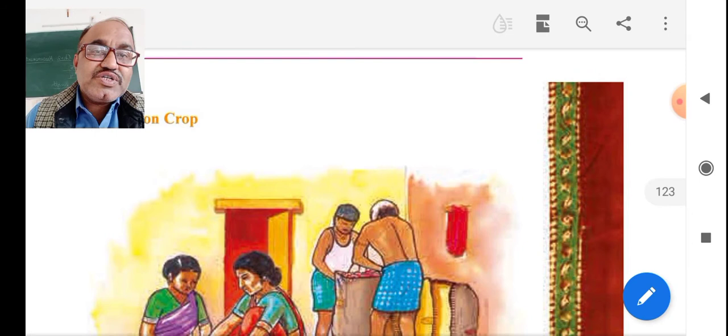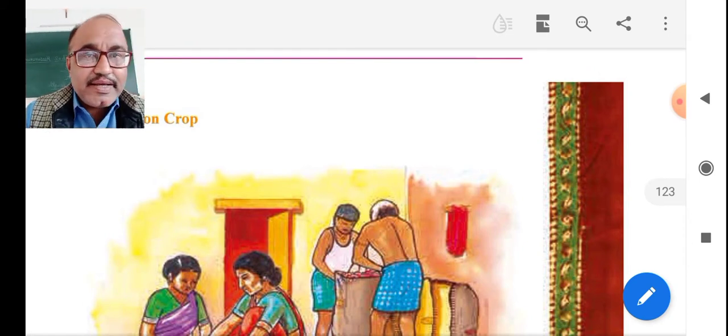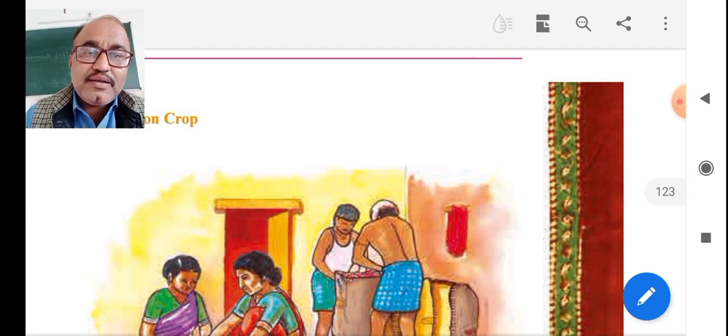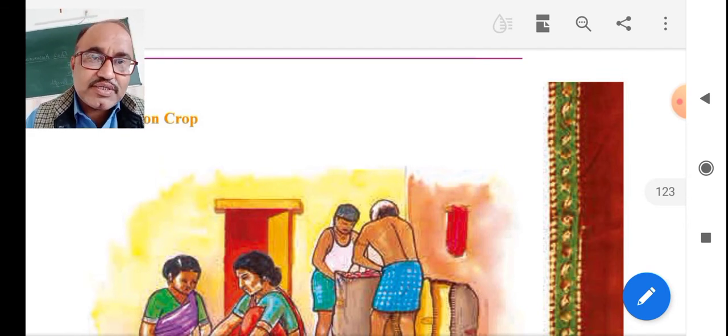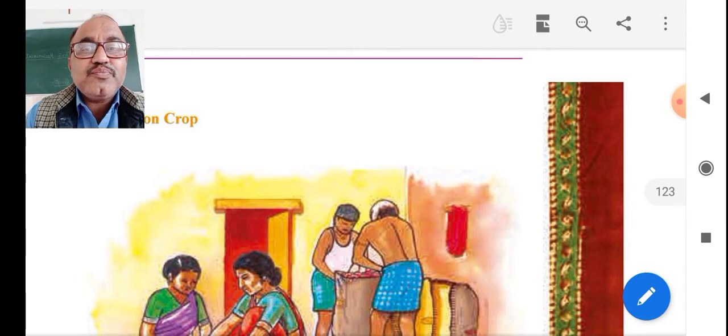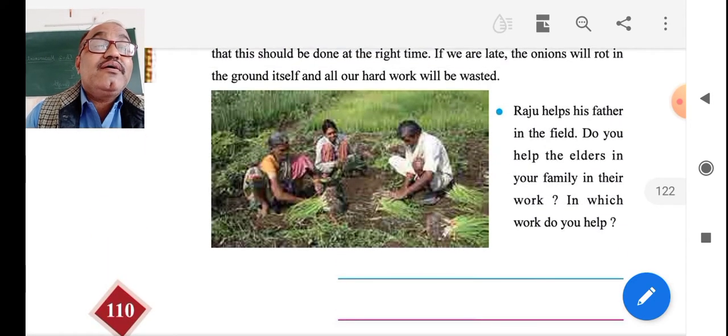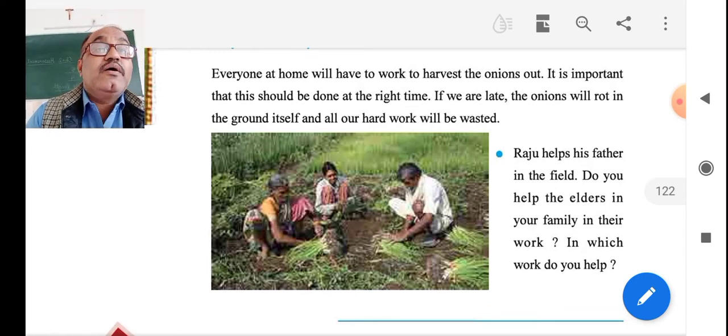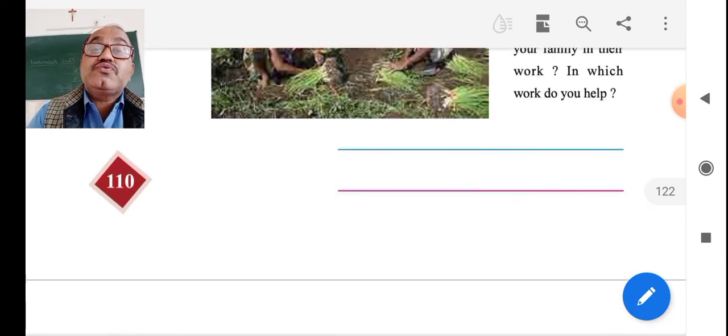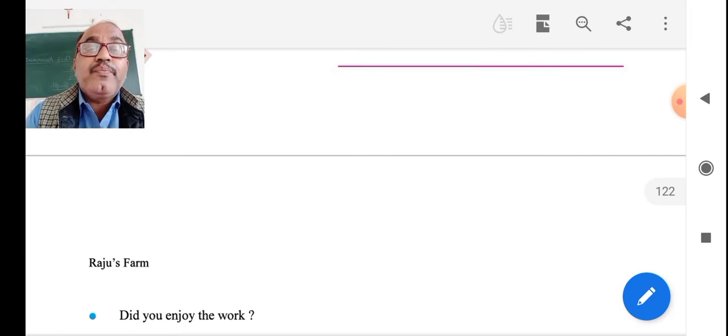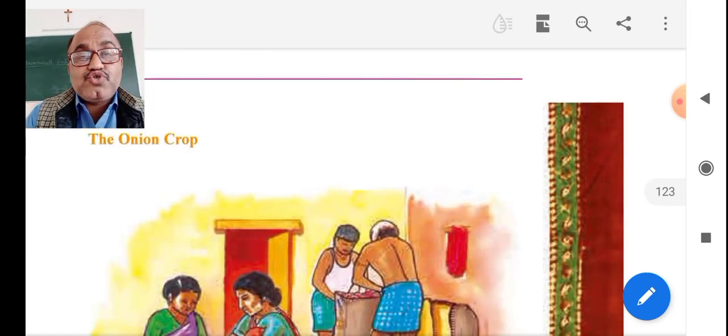Now, we shall continue when the onion crop is ready. Raju's father, uncle, mother, and auntie started putting into one sack. Before that, they cut it properly. Everyone in the house is busy with working. They enjoy the work.